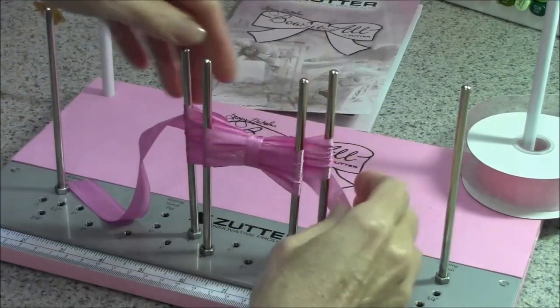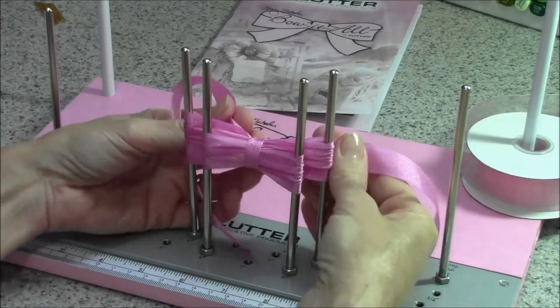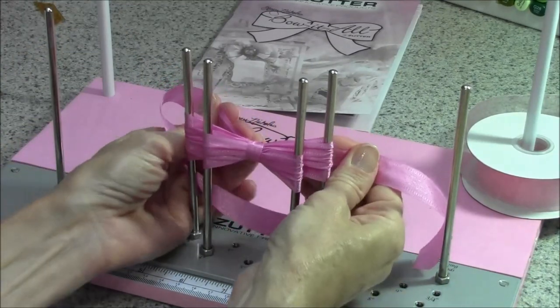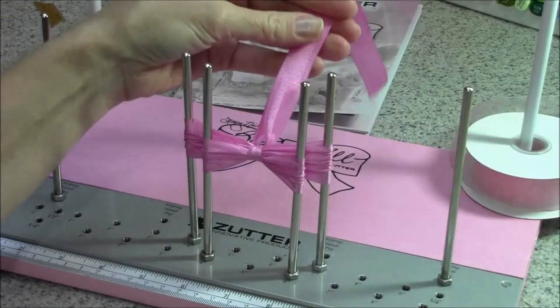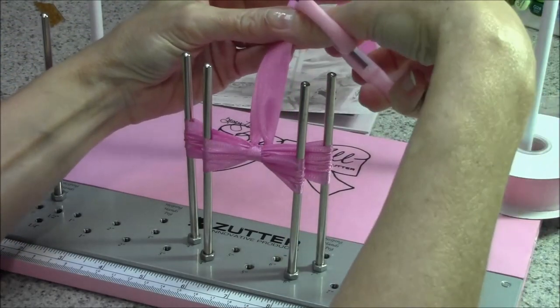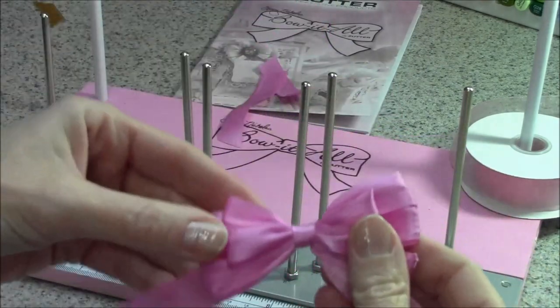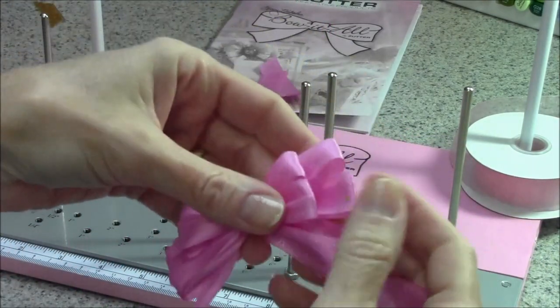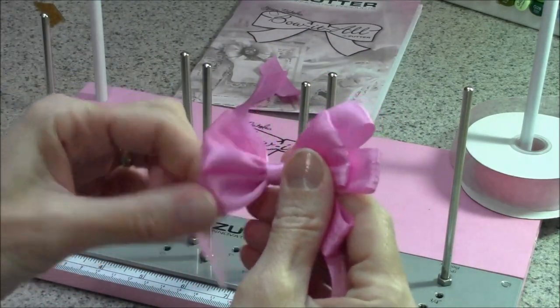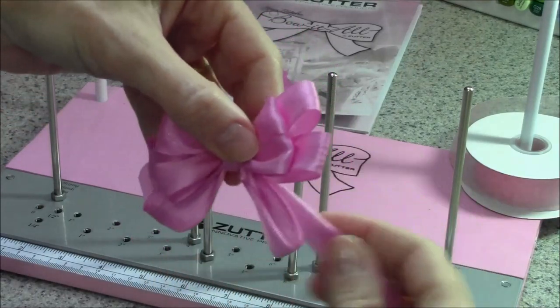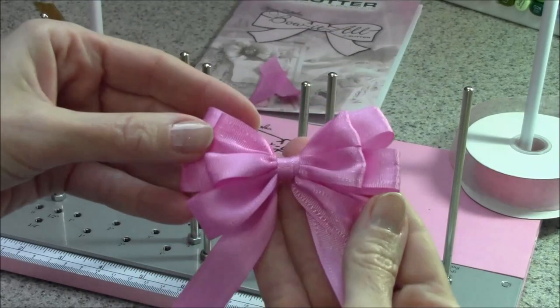Gently pull it. Check and see if you want to make any adjustments. Sometimes it's easier to pull it tight if you squish your bow down. And then we're going to pull as tight as we can. Trim your tails. And slide your bow off. And then just fluff your little loops. And there's your pretty layered bow.